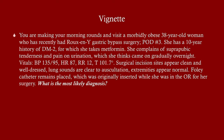We're going to talk about UTI. Let's start with the vignette. You're making morning rounds and visit a morbidly obese 38-year-old woman who recently had a Roux-en-Y gastric bypass surgery. She's post-op day three, has a 10-year history of type 2 diabetes managed with metformin, and complains of suprapubic tenderness and pain on urination that came on gradually overnight. Vitals are within normal limits except for a mild fever. Surgical incision sites are clean, lung sounds clear, extremities normal, and the Foley catheter placed in the OR remains in on day three. The most likely diagnosis is a post-op UTI.